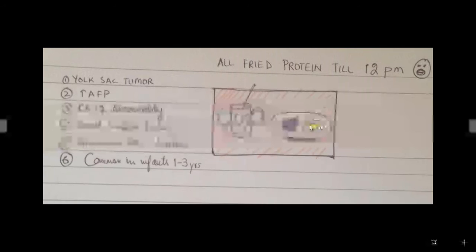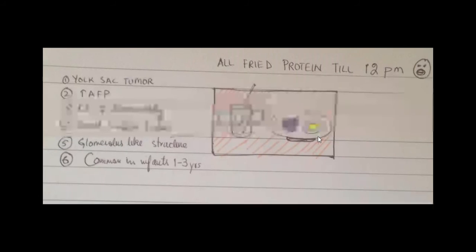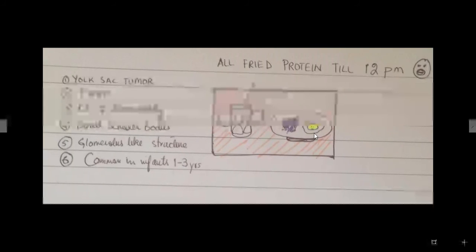As the name is saying it's a yolk sac tumor, the egg yolk of my fried egg is showing this yolk sac tumor. And it is grossly a yellowish mucinous tumor. So the yellow color of the yolk will be helpful in remembering the yolk sac tumor yellowish color.